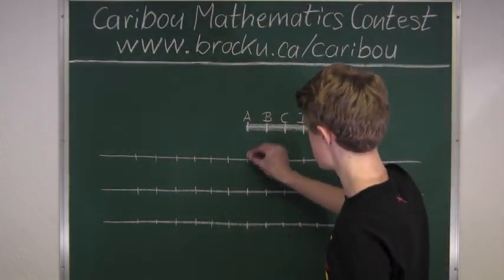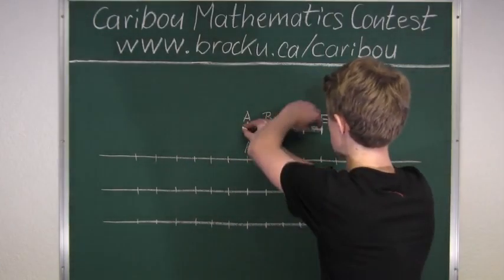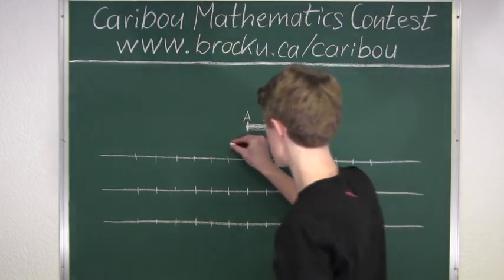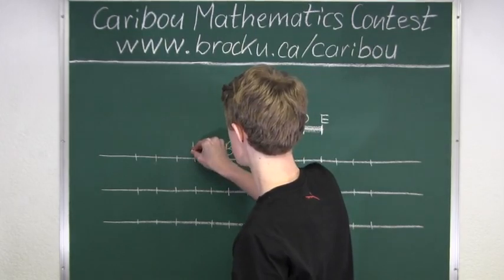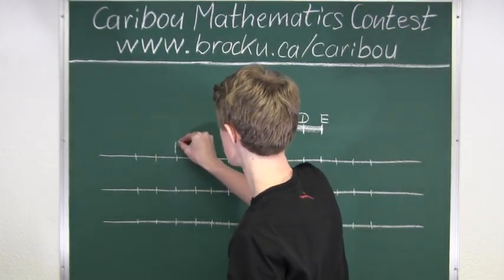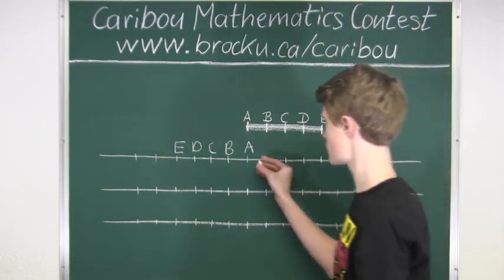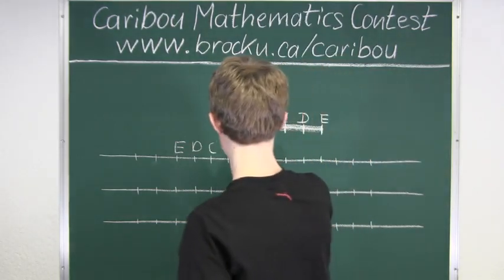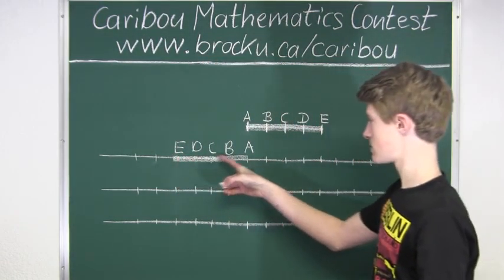So we know that A would stay in the exact same spot, and then we know that B would be next, C, and they would be following. Okay, so this is the first rotation, and we know that the rod goes from A to E, so this is the rod.